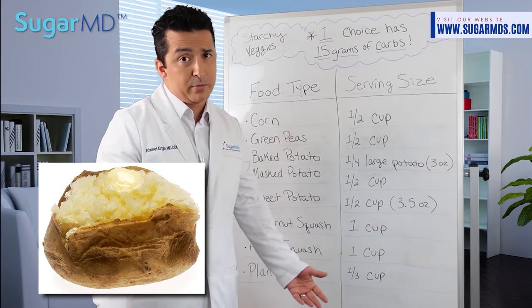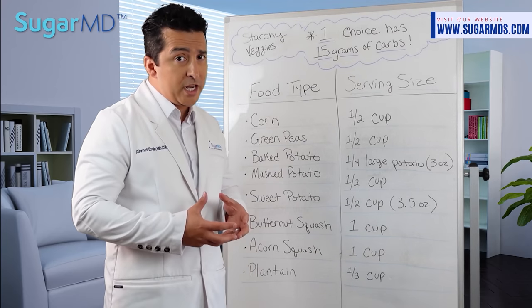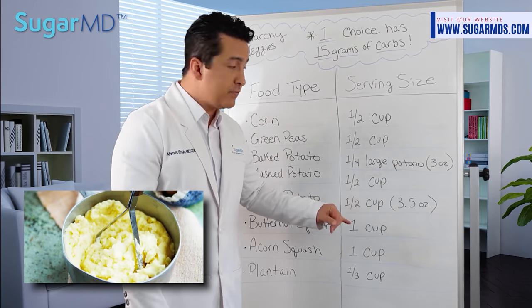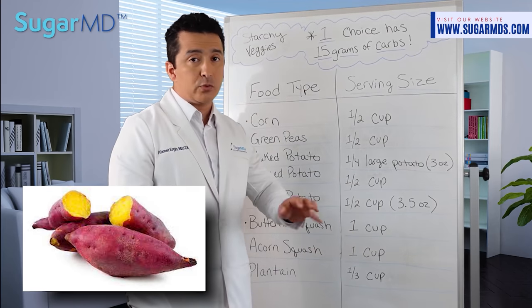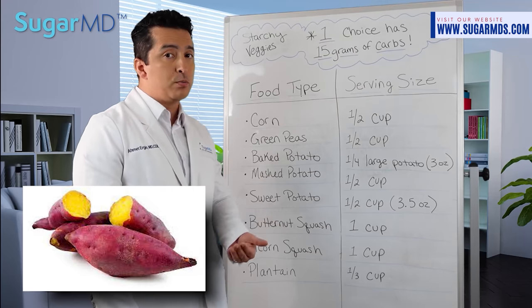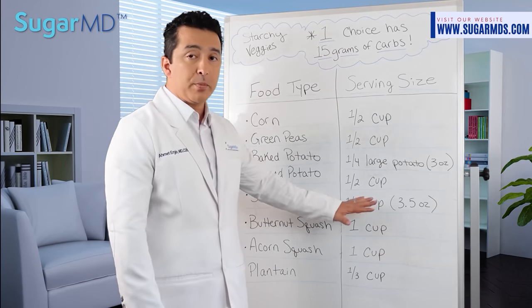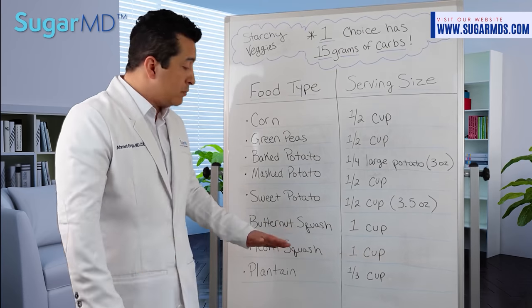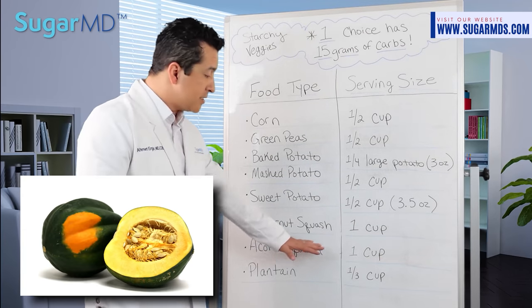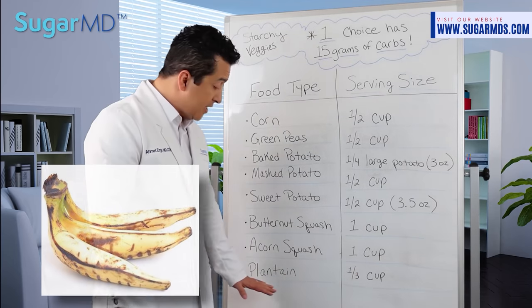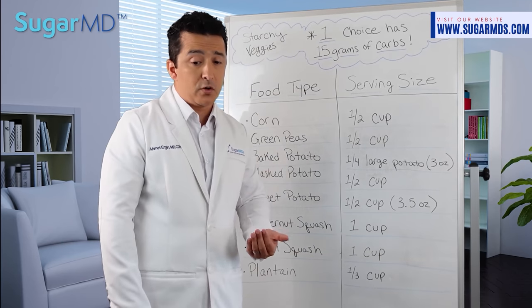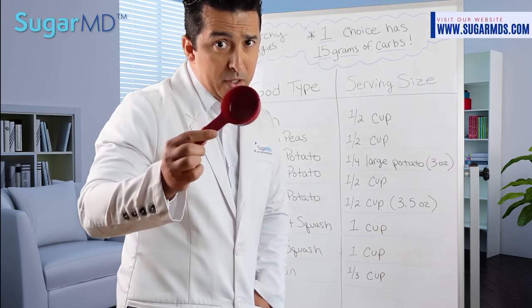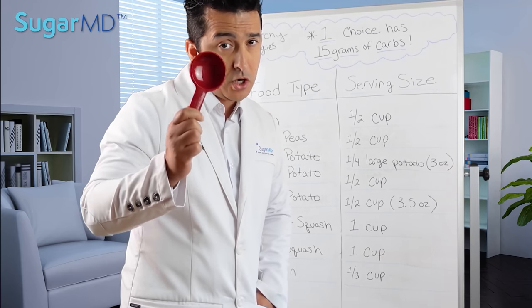One-quarter of a large potato is 15 grams, so the whole large potato is 60 grams — keep that in mind when eating potato. Mashed potato is half a cup for 15 grams. Sweet potato is the same — half a cup is around 15 grams; although sweet potato spikes blood sugar slower, the total carb amount is equal. Butternut squash and acorn squash are better — you can have a whole cup for only 15 grams. Plantain is one-third of a cup for 15 grams, so I don't really know anyone who eats that little.